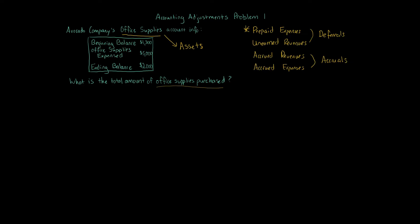We are looking at the office supplies beginning balance of $1,300, the ending balance, and the office supplies expense. We're trying to determine the amount of supplies purchased. There's a formula called BASE — an acronym — that you can use for this calculation. BASE is relevant in many things and applies here. The B and E represent beginning and ending balance.